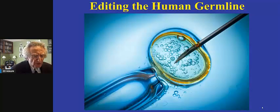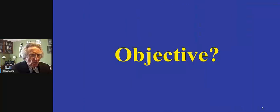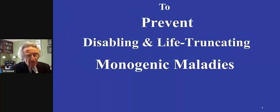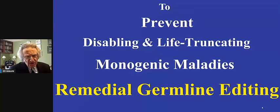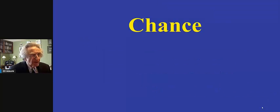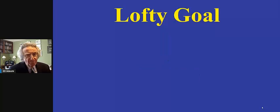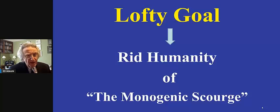Which brings us to editing the human germline and, of course, to our discipline. What is the objective of germline editing? The objective is to prevent disabling and life-truncating monogenic maladies. This is sometimes referred to as remedial germline editing, and has also been described as the conversion of chance to choice. This is a lofty goal which, in principle, could rid humanity of the so-called monogenic scourge.